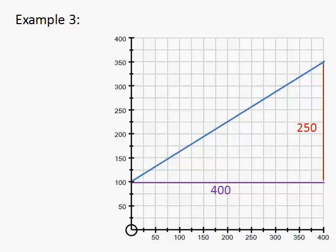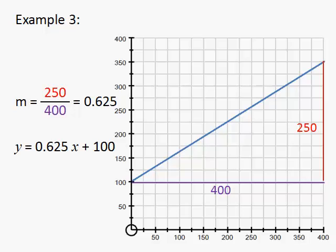We go 400 across and 250 up. So our rise over run is 250 over 400, which a calculator tells us is 0.625. That gives us our equation for our line. Our starting point of 100 is our constant, and our gradient is our rise over our run. It's in situations like this that rise over run really takes over.